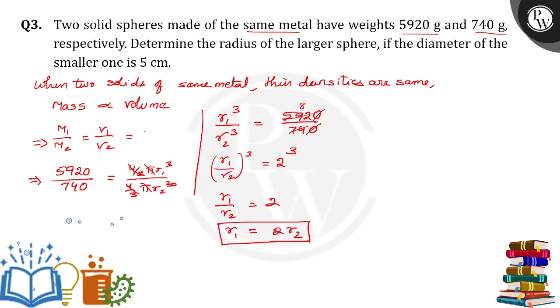What is R1? Radius of the larger sphere. What is R2? Radius of the smaller sphere. Here diameter is given for the smaller one. Diameter of smaller sphere is equal to 5 centimeter.